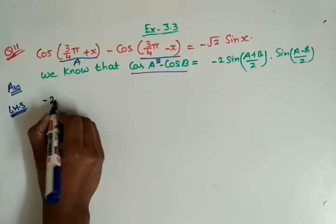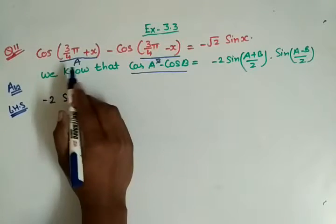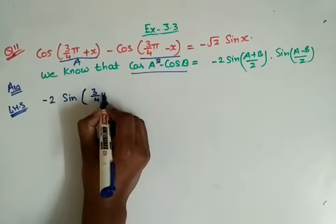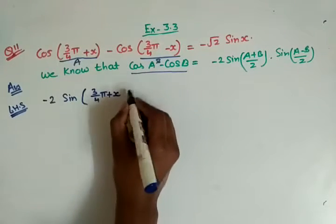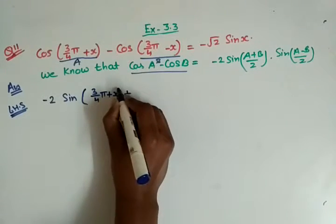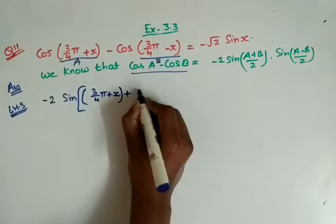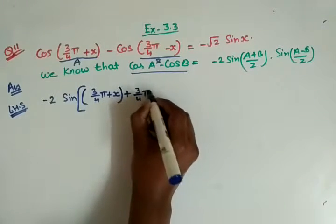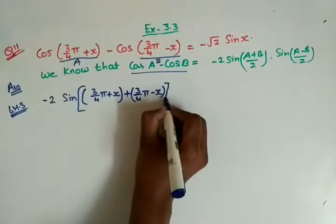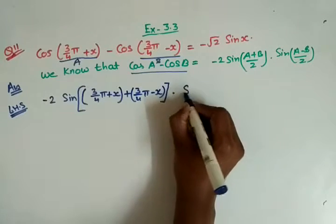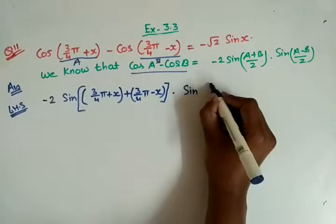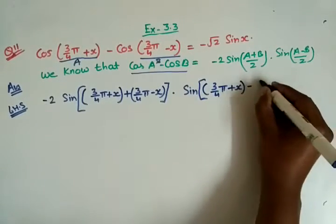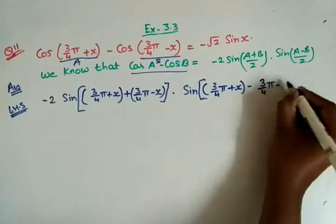So it will be -2 sin, where A is 3π/4 + x and B is 3π/4 - x, giving us sin[(3π/4 + x) + (3π/4 - x)]/2 · sin[(3π/4 + x) - (3π/4 - x)]/2.